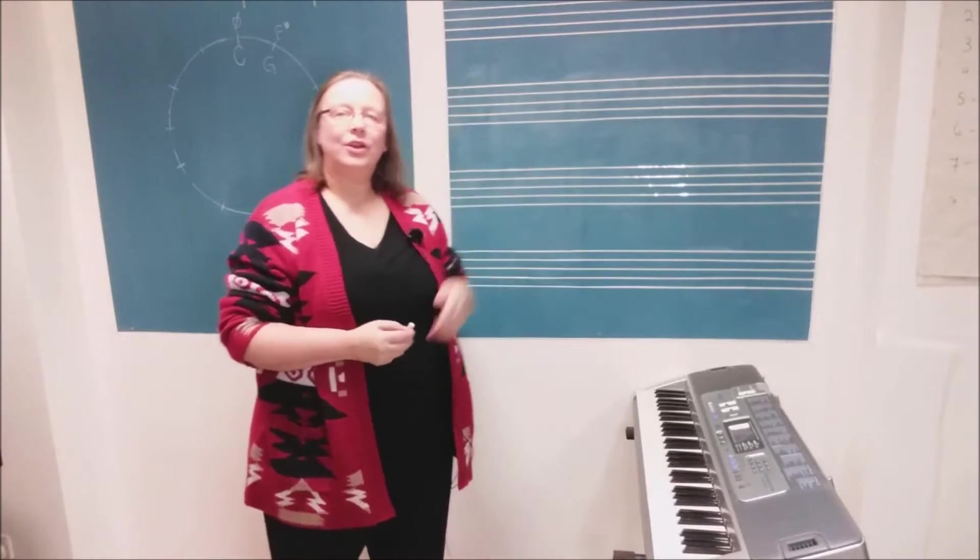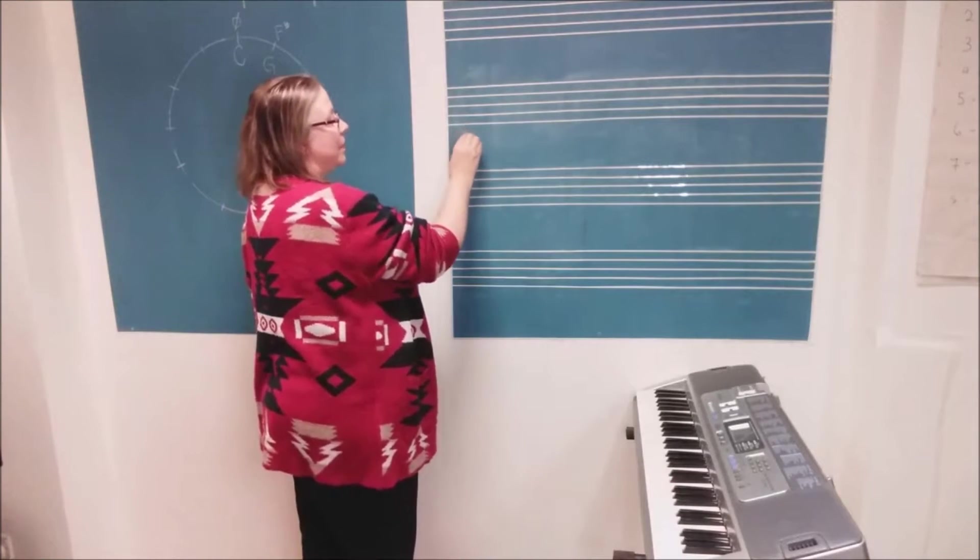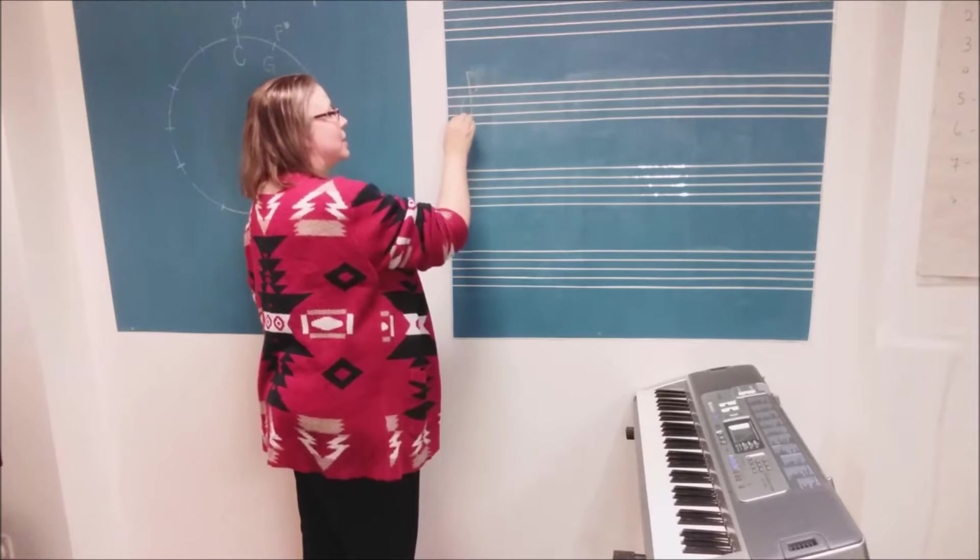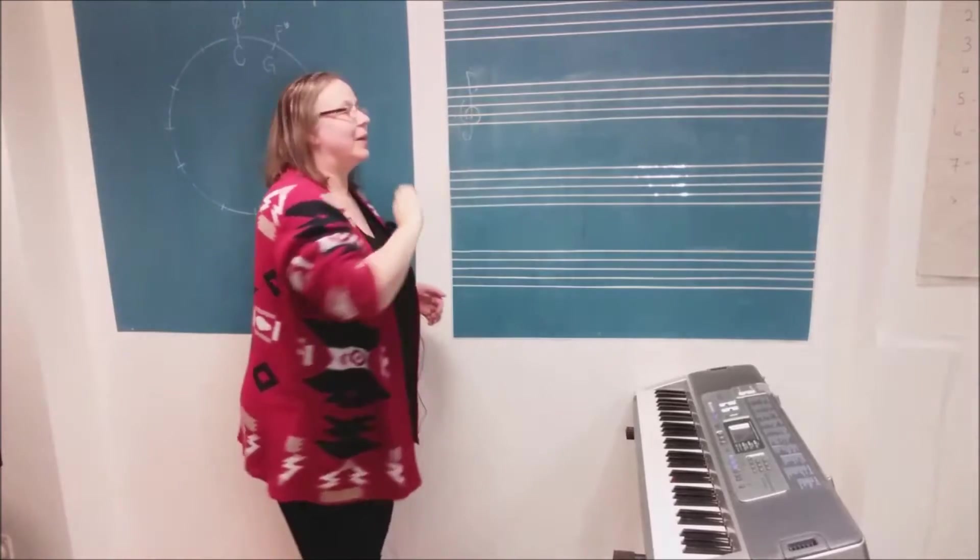To start, we need to draw a treble clef on the board. We start at the bottom, all the way up, hook round. There we go.